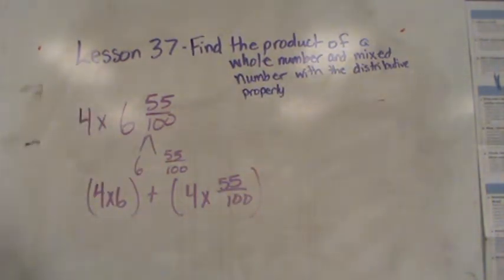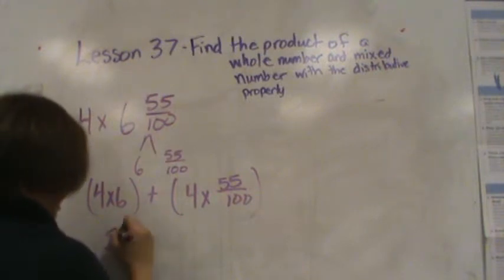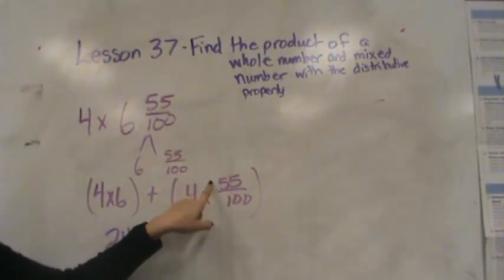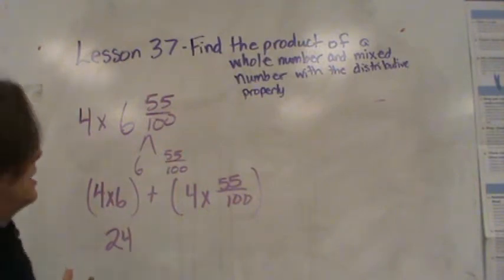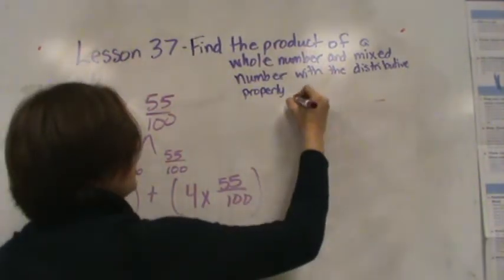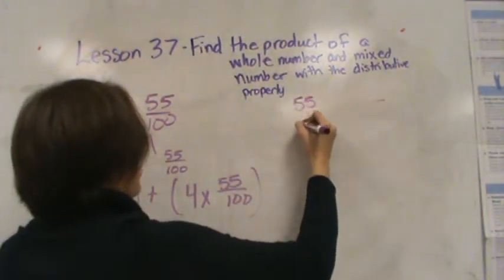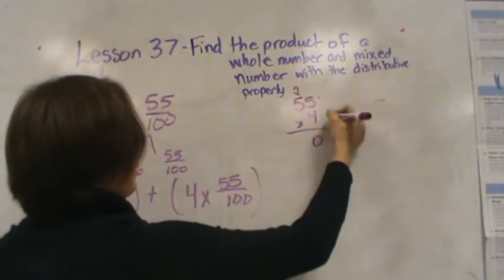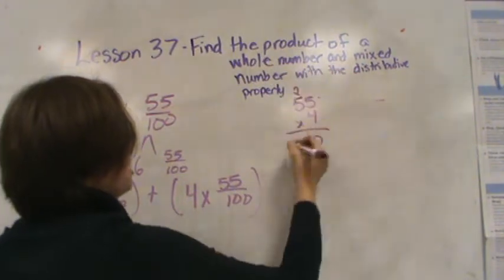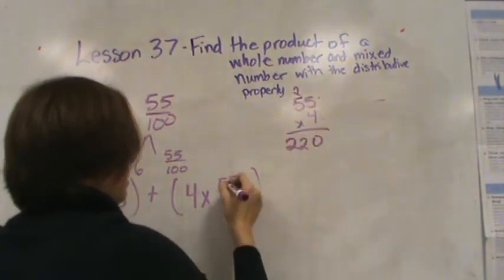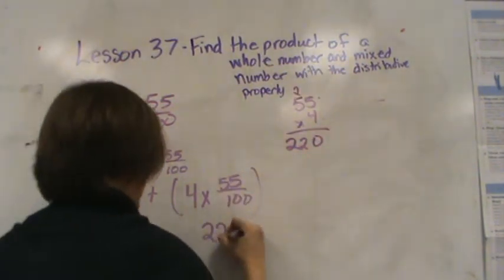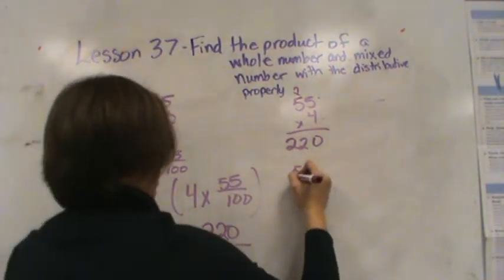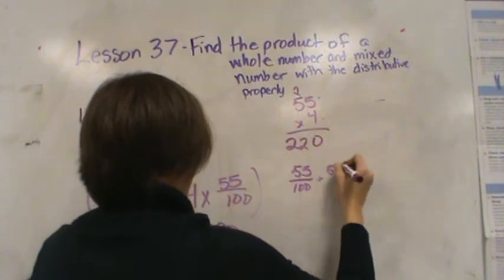I know off the top of my head that 4 times 6 is 24. But I can't count by 55 four times in my head. So I am going to do some quick standard algorithm. 4 times 5 is 20. Carry the 2, drop the 0. 4 times 5 is 20 plus 2 is 22.